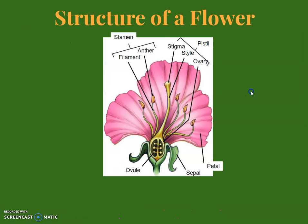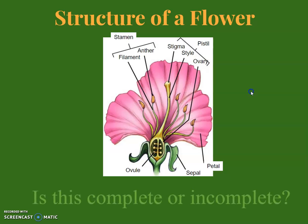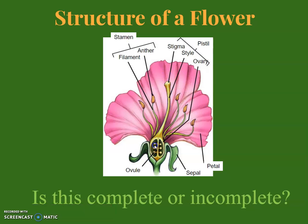Here is another labeled diagram of the flower structure. Looking at this flower, is it complete or incomplete? This would be a complete flower, because it has the sepal, the petals, the pistil with stigma and style, and the stamens — so it has all four parts.